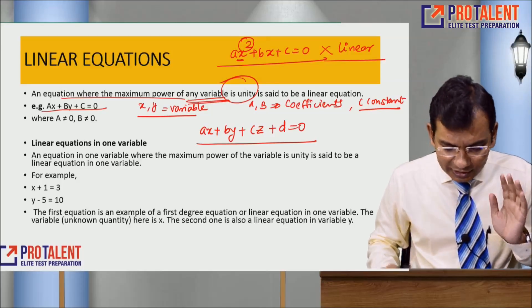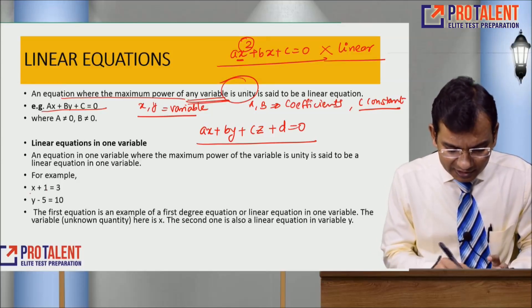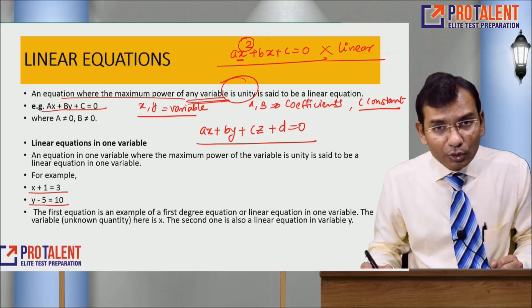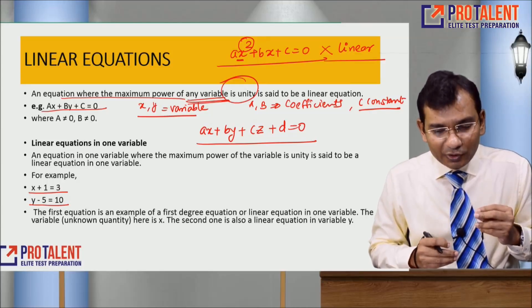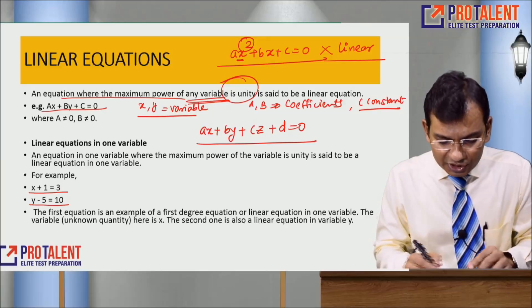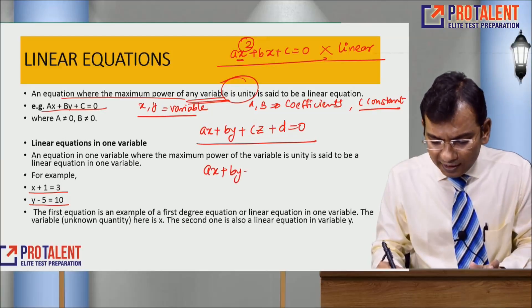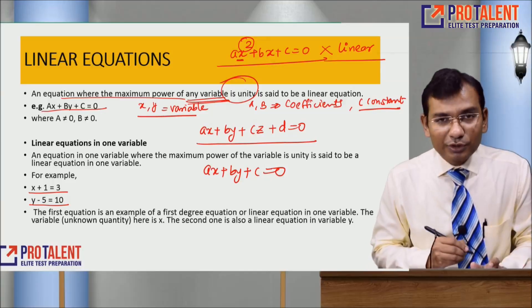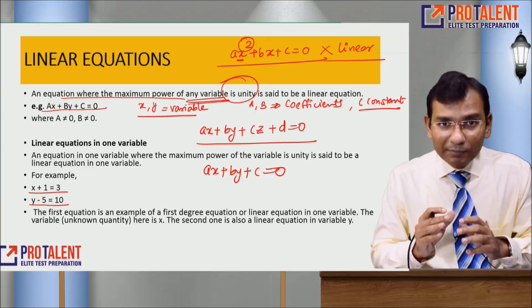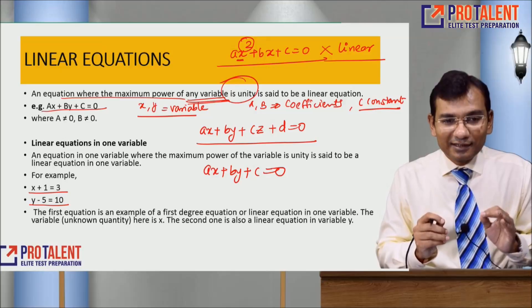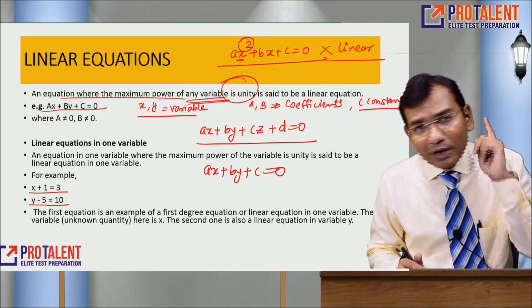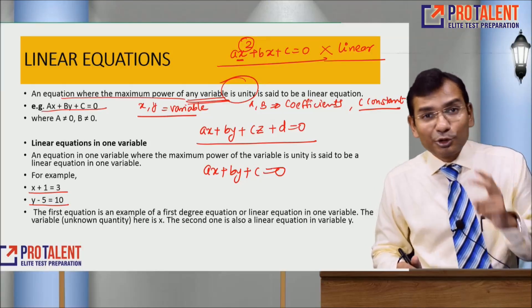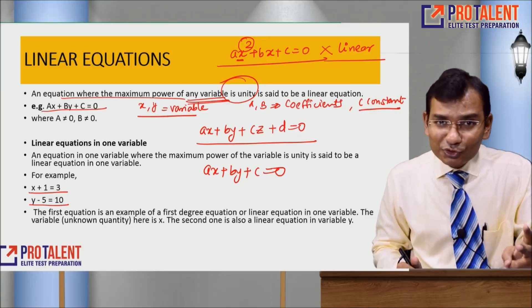Linear equations in one variable look like: x plus 1 equal to 3, or y minus 5 equal to 10. Linear equations in two variables look like: ax plus by plus c equals zero. One very important thing to remember: if you have one variable you require one equation to solve it; if you have two variables you require two equations; if you have three variables you require three equations.